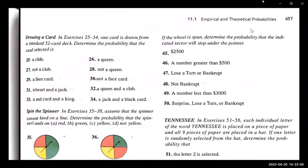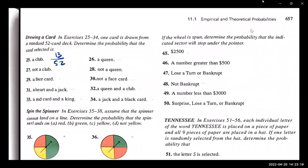One card is drawn from a standard deck of 52. Determine the probability that the card selected is a club. There are 13 cards in each suit, so there's 13 clubs out of 52. Now let's go with the face card. How many face cards are there?